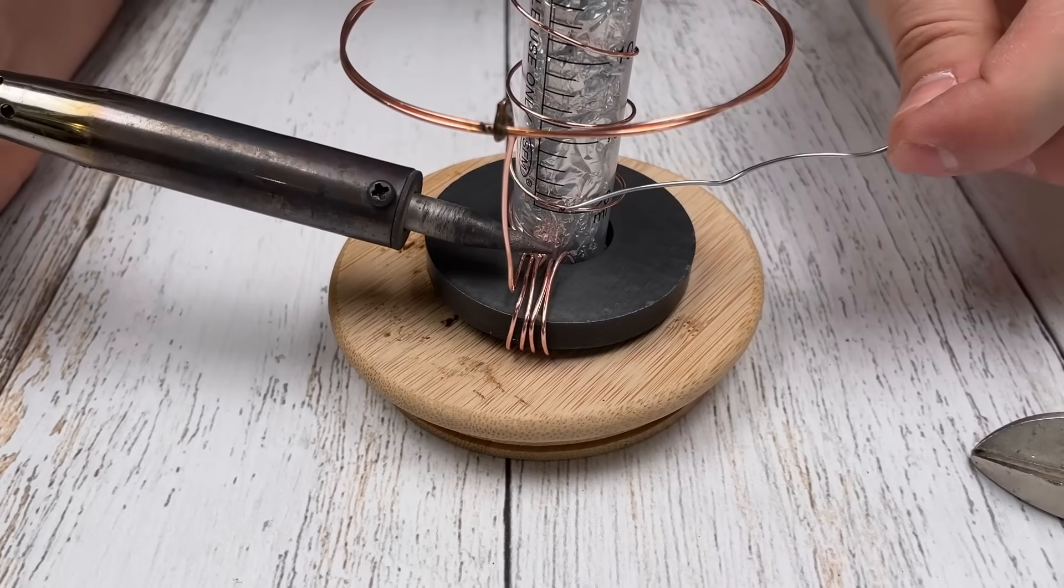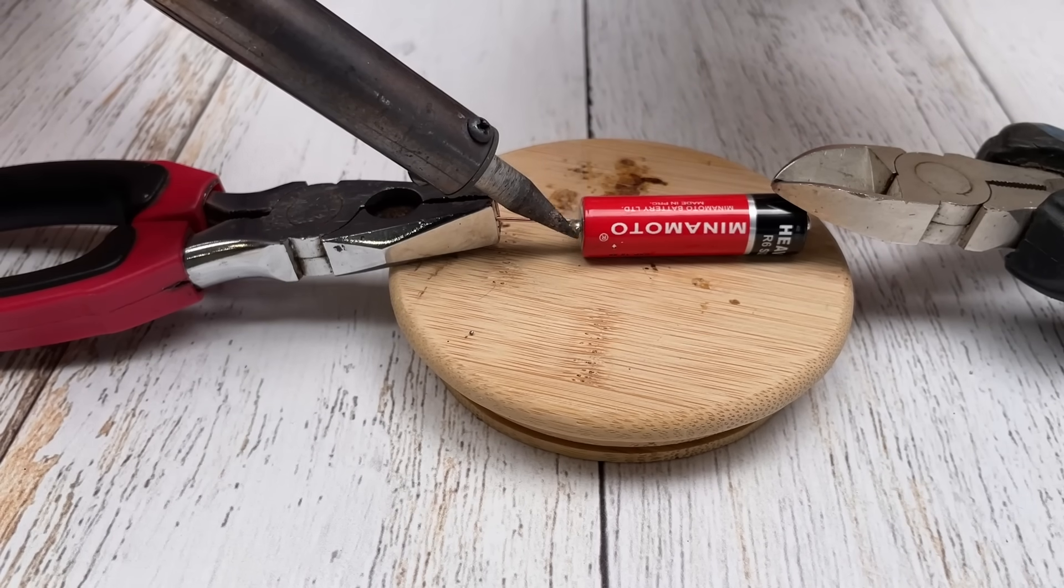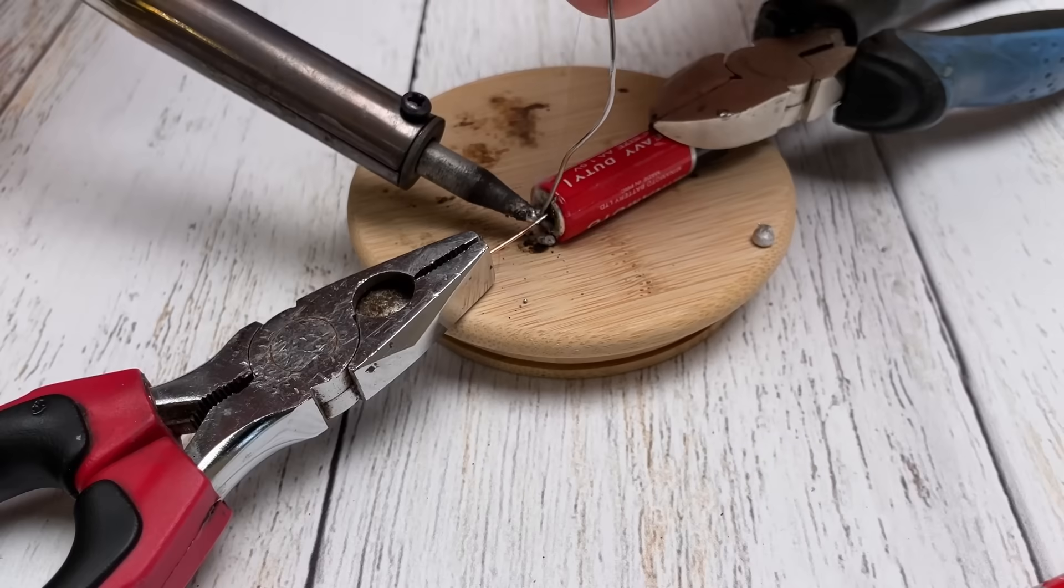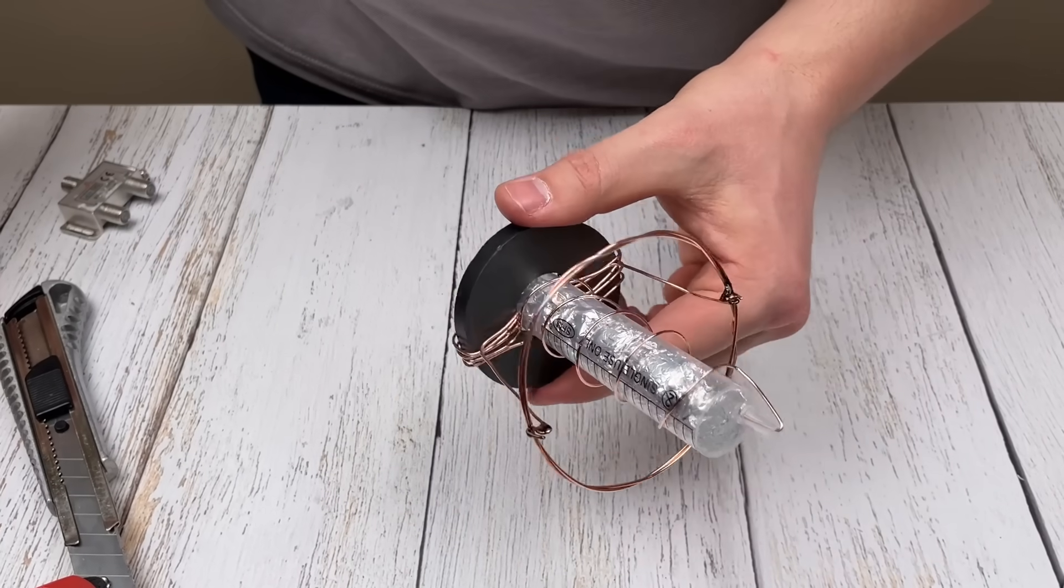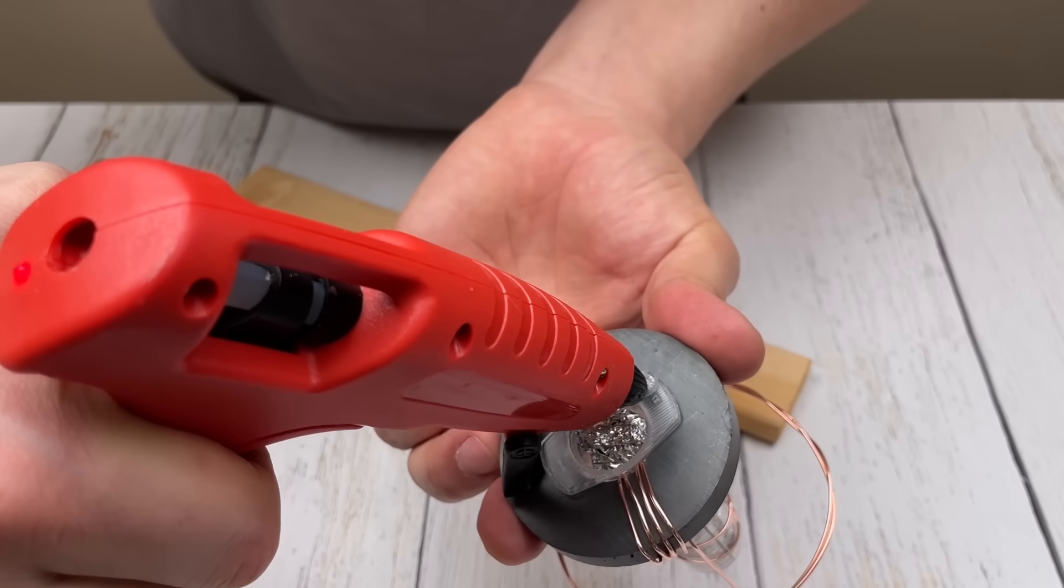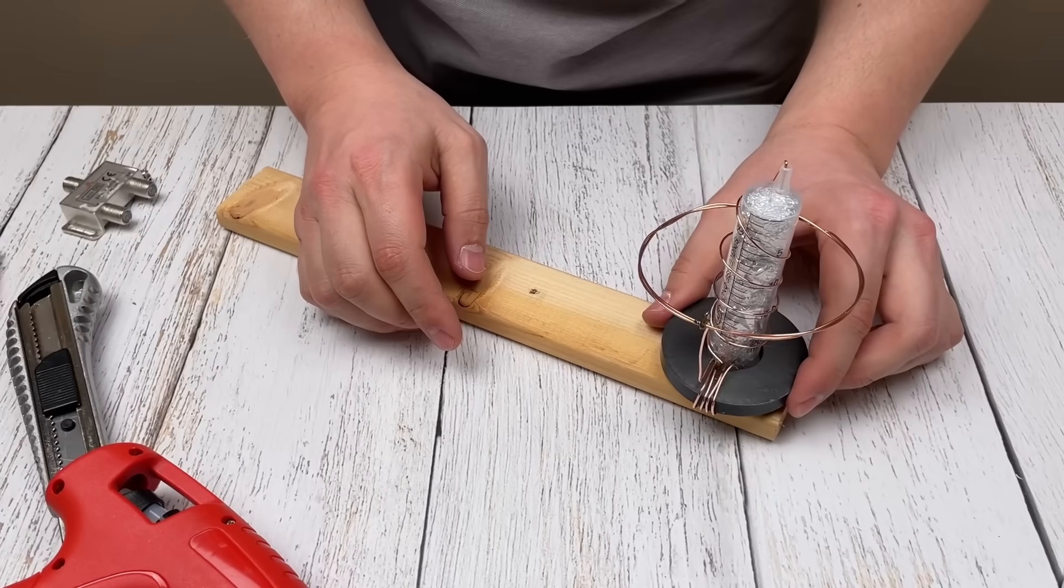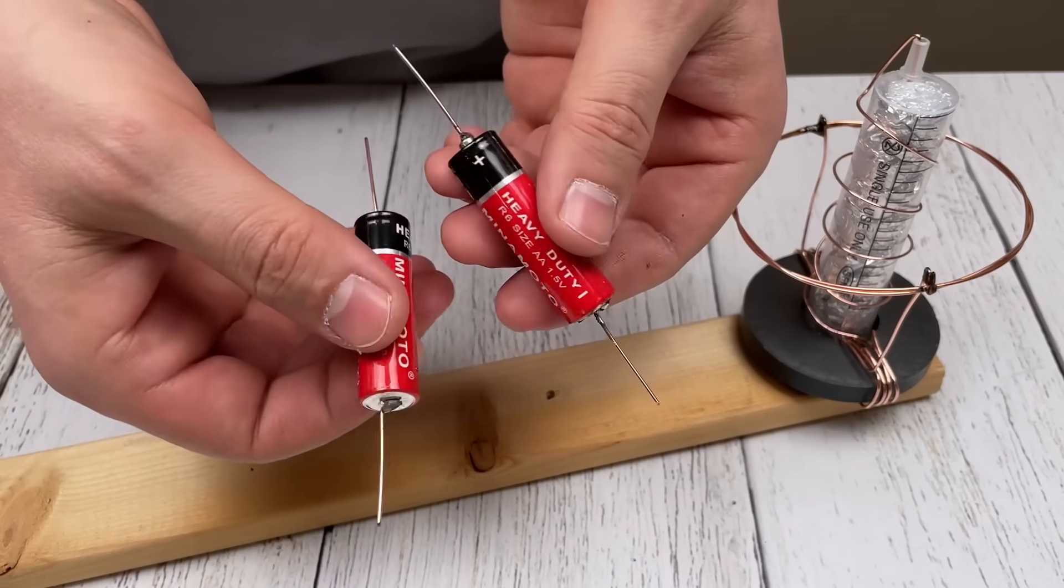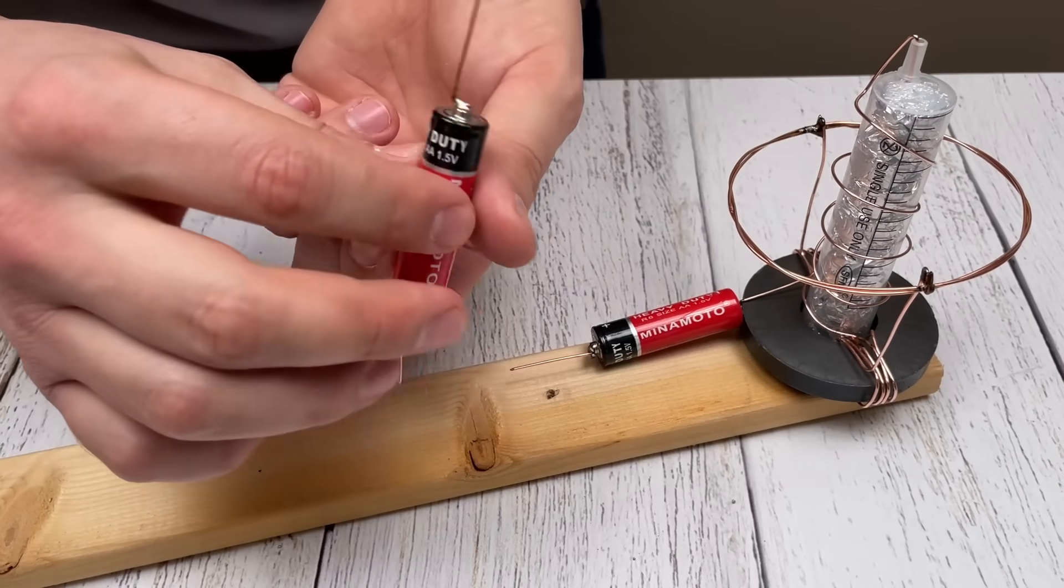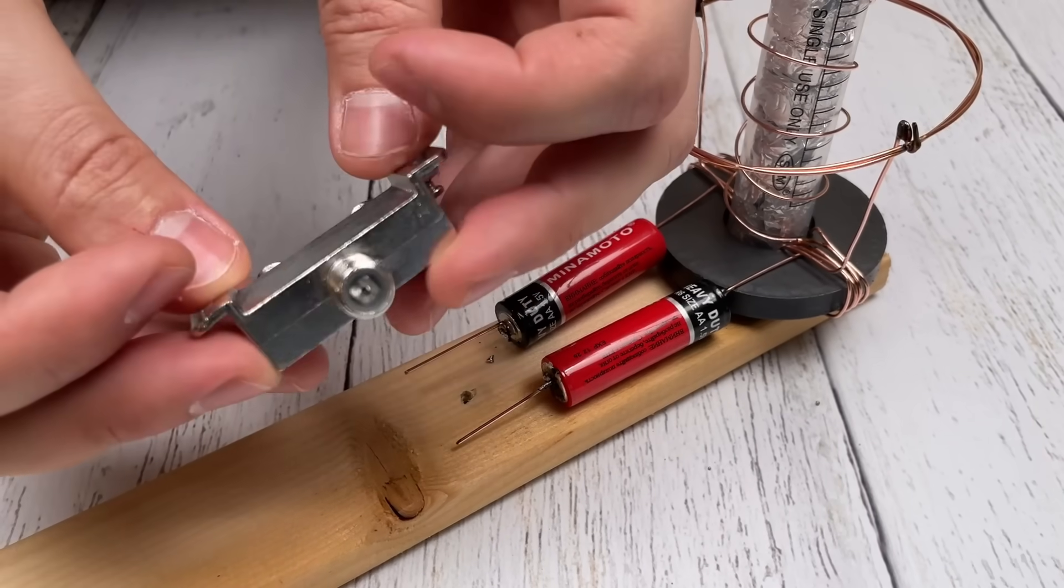And finally, the most important thing is the connection to the batteries. Connect two AA batteries to the base of the magnet to power the antenna. Then use wires to connect the antenna splitter to the batteries.